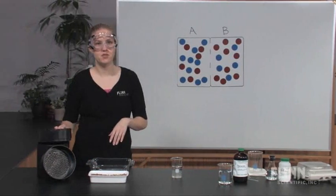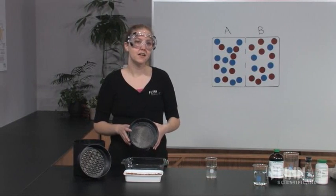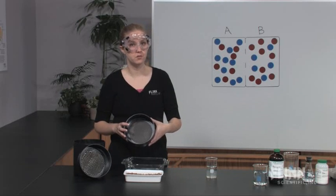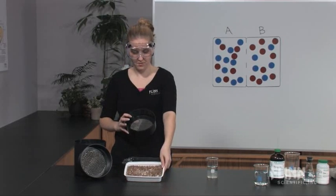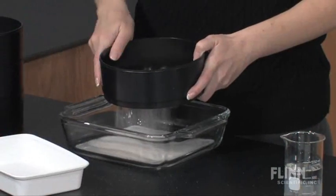A sieve can be used to demonstrate a selectively permeable membrane on a macroscopic level. Depending on the size of the sieve screen, some materials will pass through and others will not. Here I have a sand and pebbles mixture obtained from a local lake. The sieve can work as a selectively permeable membrane to separate the sand from the pebbles.